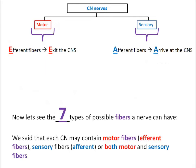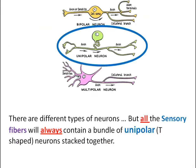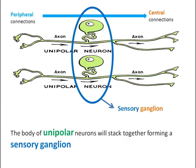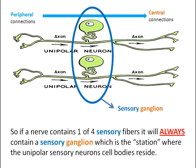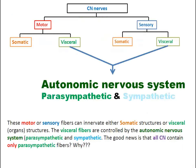Each cranial nerve may contain motor fibers (efferent), sensory fibers (afferent), or both motor and sensory fibers. There are different types of neurons, but all the sensory fibers will always contain a bundle of unipolar, T-shaped neurons stacked together. The body of unipolar neurons will stack together forming a sensory ganglion. So if a nerve contains one of four sensory fibers, it will always contain a sensory ganglion, which is the station where the unipolar sensory neuron cell bodies reside.